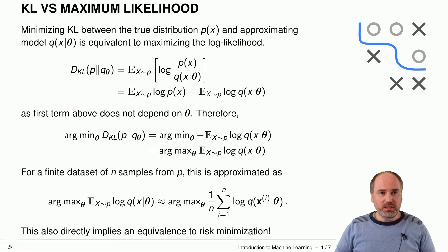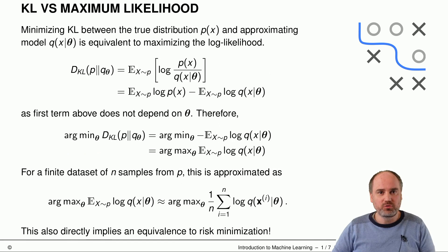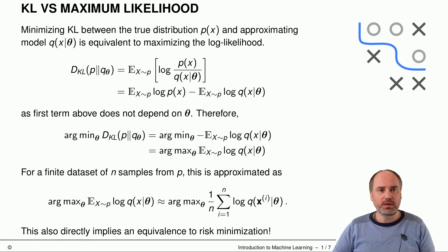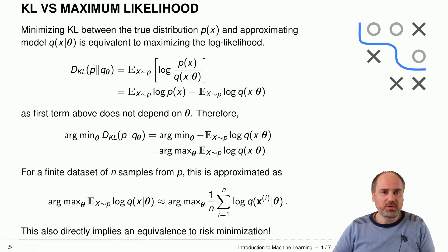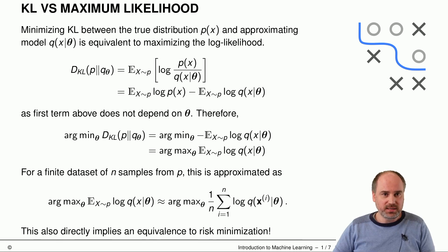We've already introduced Kullback-Leibler, and now minimizing the Kullback-Leibler divergence between the true distribution p of x and an approximating model, which we denote by q of x parameterized by a parameter vector theta, is equivalent to maximizing the log likelihood, as we can now easily see on this slide.